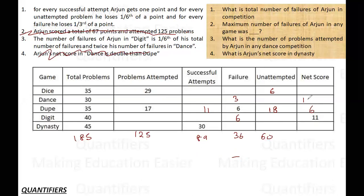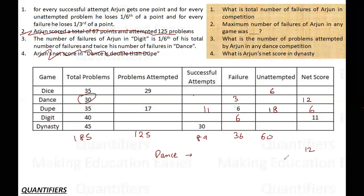Arjun's net score in Dance is double that of Dupe, so Dance net score = 12. Now I have some limitations — I don't have complete data so I have to use hit and trial. In Dance the total questions are 30. I know that the unattempted part must be a multiple of 6, because the score formula is: correct − (1/3)×wrong − (1/6)×unattempted, and we need integer results.